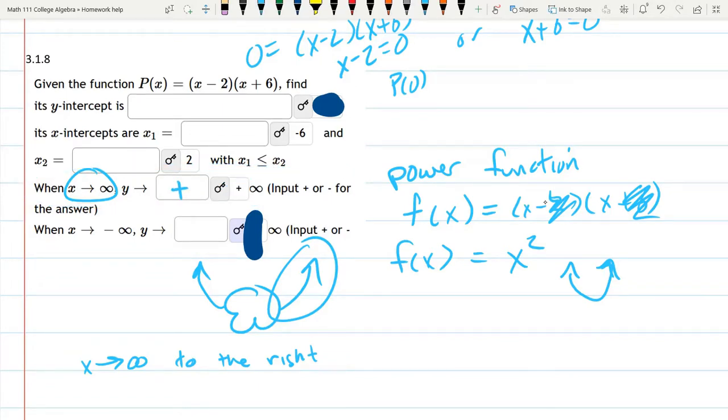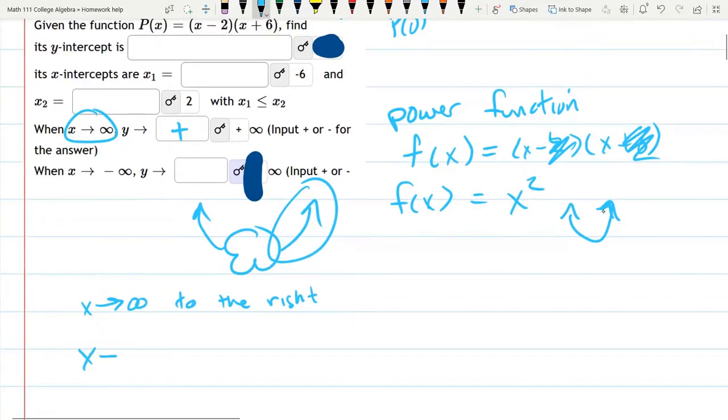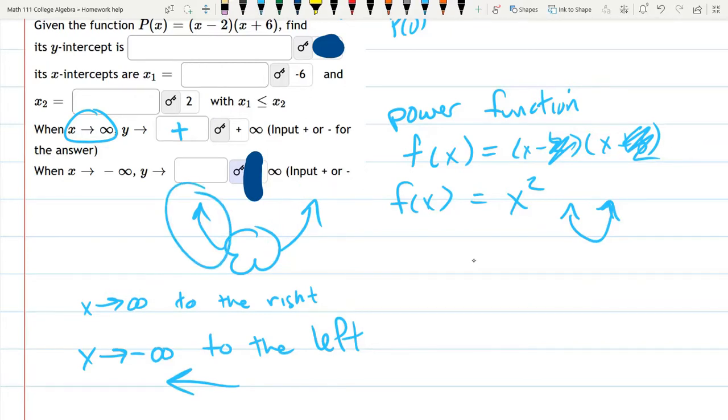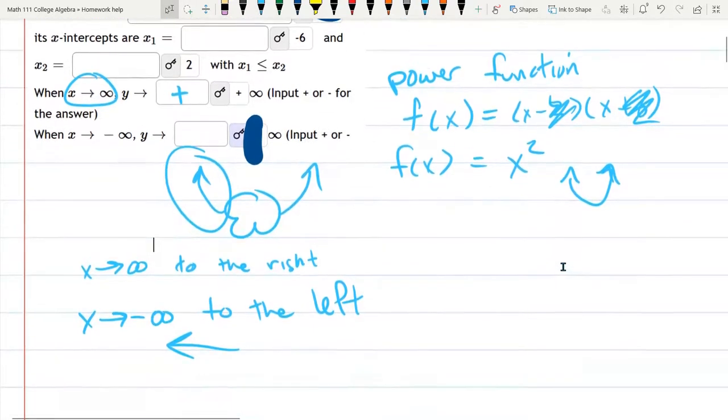Okay, so now for the last part: x approaches negative infinity. This means to the left, when x gets smaller and smaller, or more and more negative, referring to that side of the end behavior. It turns out they're both up, so as x approaches negative infinity, y approaches positive infinity.